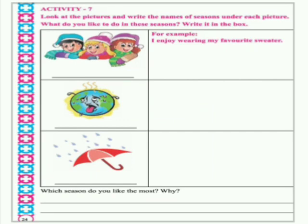This is activity number 7 in your textbook, page 24. Look at the pictures and write the names of seasons under each picture. What do you like to do in these seasons? Write it in the box.